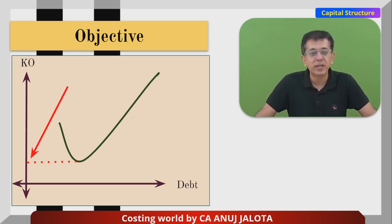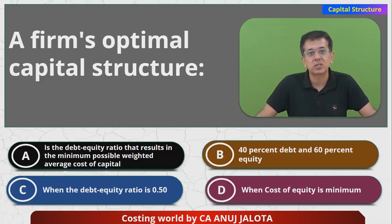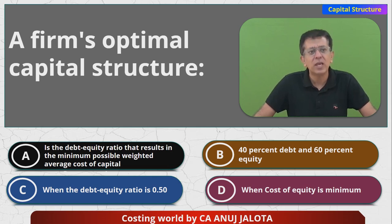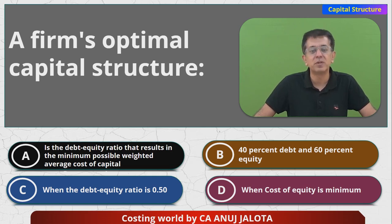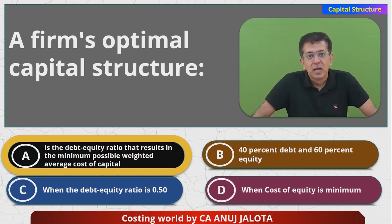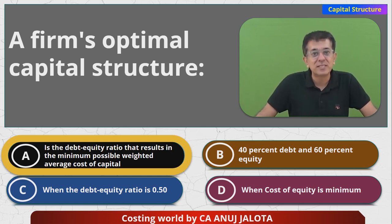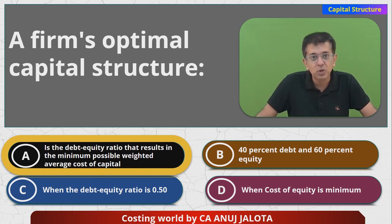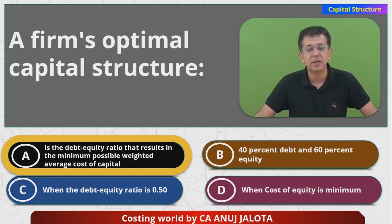That kind of a debt equity ratio is the best one where KO is least. So out of the four answers, it should be A. Because A says it's that debt equity ratio that results in minimum possible weighted average cost of capital. A is the correct answer. The aim of doing all these questions is that you get to answer these questions — it is only of use if you answer them. I'll see you next time with another question. Till then, take care. Bye.